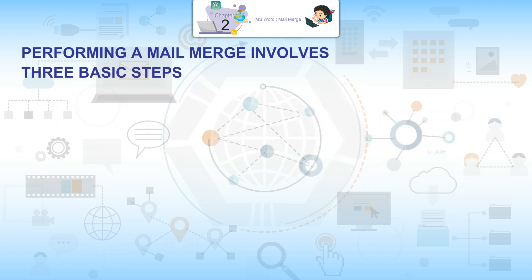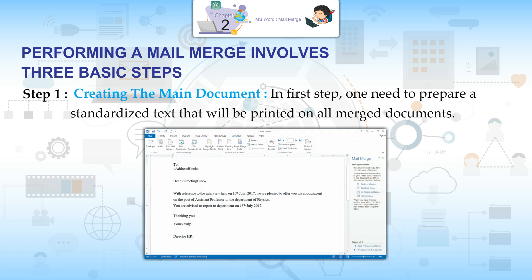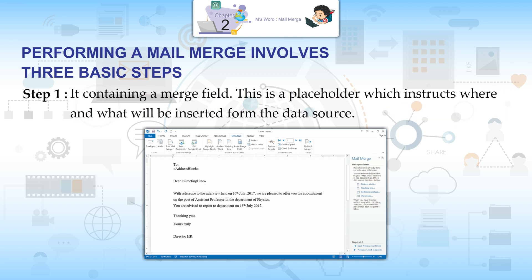Performing a mail merge involves three basic steps. Step 1: Creating the Main Document. In the first step, one needs to prepare a standardized text that will be printed on all merged documents. It contains a merge field, which is a placeholder that instructs where and what will be inserted from the data source.